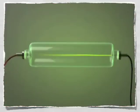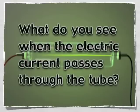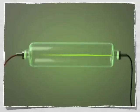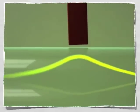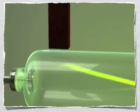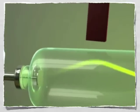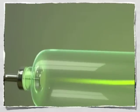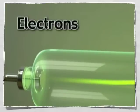What do you see when the electric current passes through the tube? You can see that light is given off. This light is created by rays traveling through the tube. Thomson observed that when a magnetic charge is introduced, the rays are deflected. Thomson reasoned that the rays were made up of negatively charged particles. Today, we call these negatively charged particles found in atoms electrons.